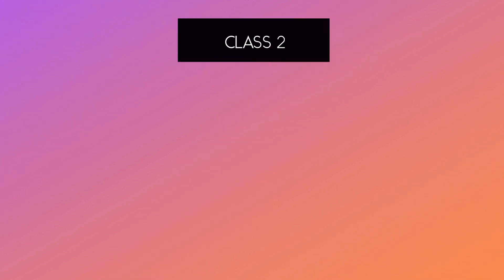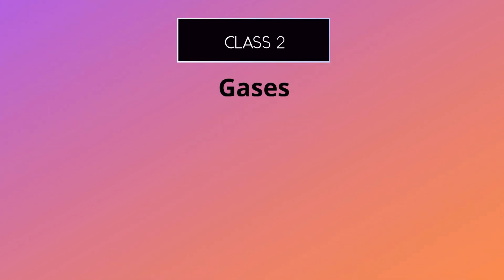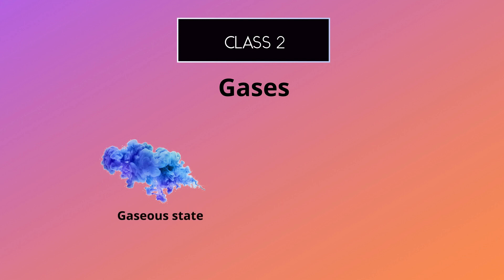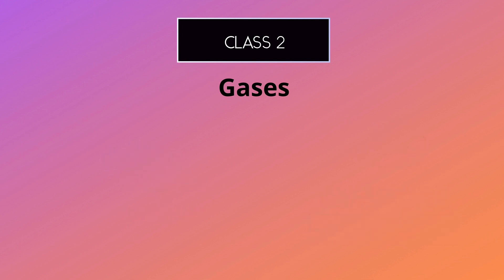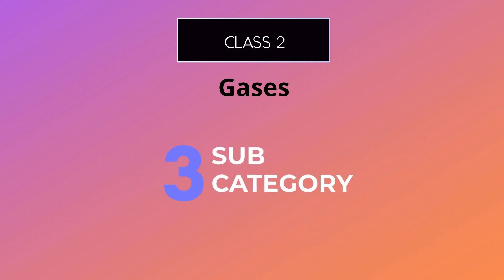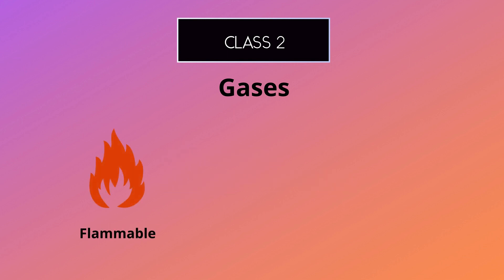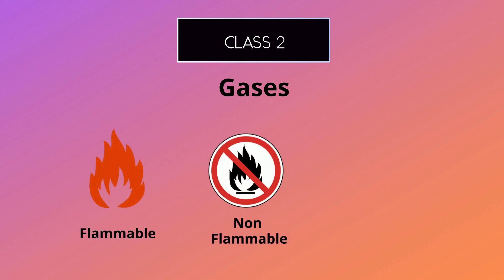The second class of dangerous goods is gases. This includes any substance that is in a gaseous state at normal atmospheric pressure and temperature. There are three subcategories of gases: flammable, non-flammable, and toxic — such as propane, acetylene, and chlorine.